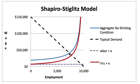Before I do that, let's note that in the Shapiro-Stiglitz model, the equilibrium is determined by the aggregate no-shirking condition where it intersects the demand curve. That intersection gives the market equilibrium wage and determines market equilibrium employment. This red curve has a constant vertical distance between it and the aggregate no-shirking condition, and I'm labeling it RVU plus e.